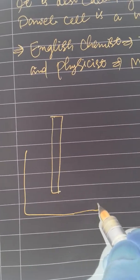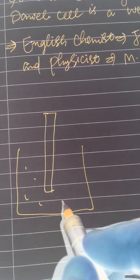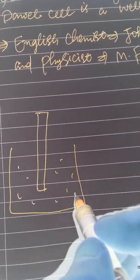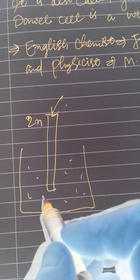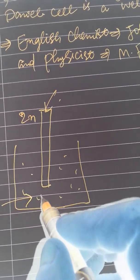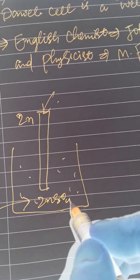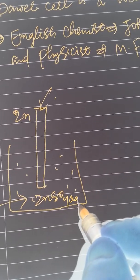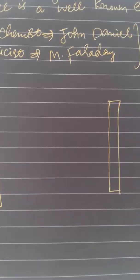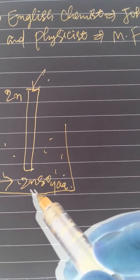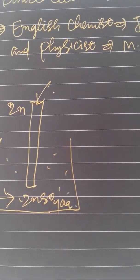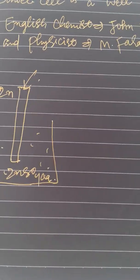Both electrodes are dipped in an electrolyte. For example, this is a zinc electrode, and the electrolyte here is ZnSO4 aqueous solution. We will discuss why zinc should be here in upcoming lectures. For now, let's focus on setting up the electrochemical cell.